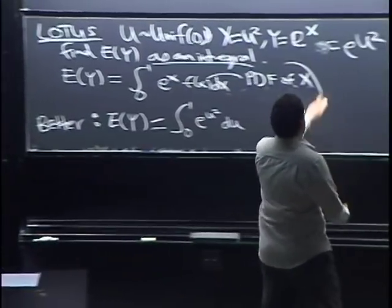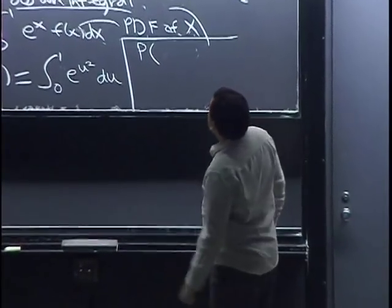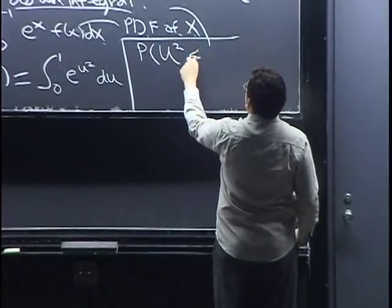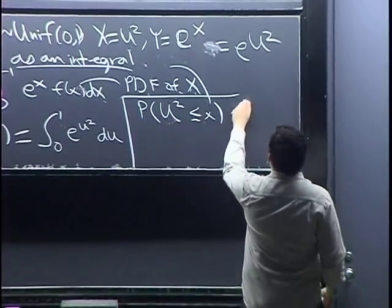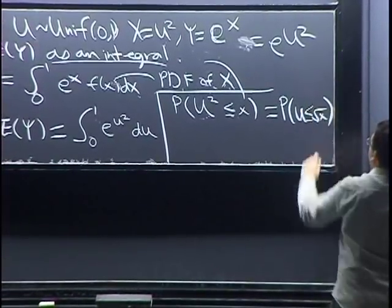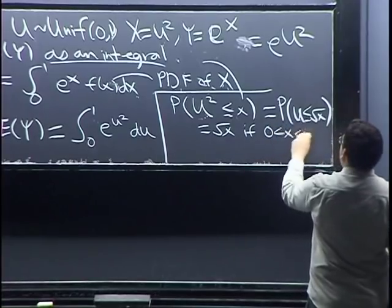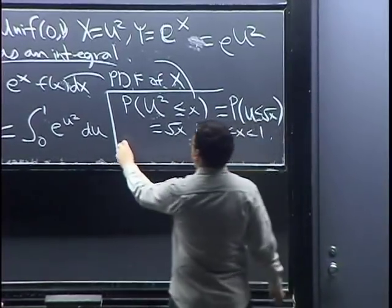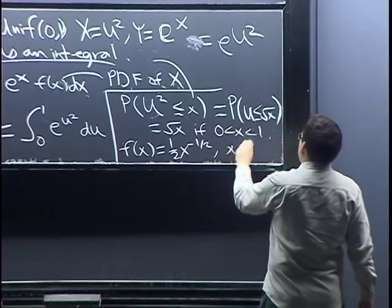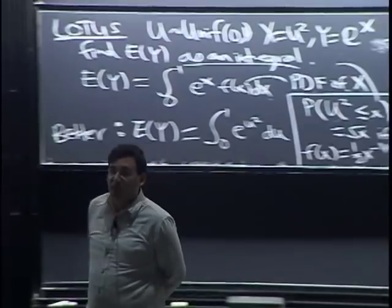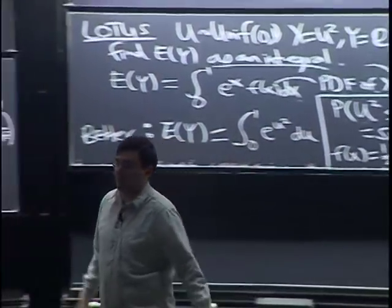How would you find the PDF? Let's do that as quick practice with CDFs and PDFs. First find the CDF: it's P(U² ≤ x). Since U is between 0 and 1, we don't have to worry about negative numbers, so we just take the square root of both sides. The CDF of X is √x for x between 0 and 1. Then the PDF is the derivative: (1/2) x^{-1/2} for x between 0 and 1. To get the CDF, understand what a CDF is and reduce it back to the uniform, which we understand.